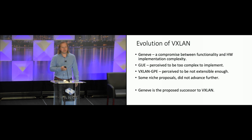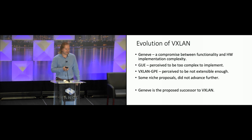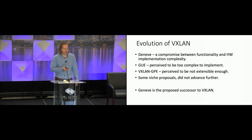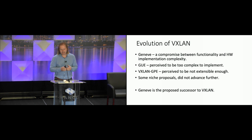What resulted? There were a multitude of proposals — three main ones: Geneve (which is actually a name, not an abbreviation), GUE (Generic UDP Encapsulation), and a direct and semi-backwards compatible extension to VXLAN called VXLAN-GPE (VXLAN Generic Protocol Extensions). GUE was perceived to be too complex — flexible, but too complex to implement in hardware. The backwards-compatible nature of GPE was seen as too limiting for the protocol to be future-proof. There were some niche proposals that did not advance far. Geneve was seen as a compromise between extensibility and the ability to implement it in practical systems.